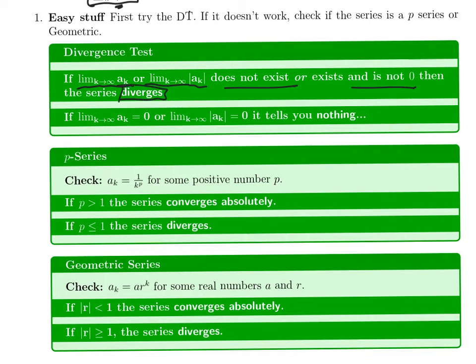So if the limit does anything other than converge to zero, that means if it converges to a number that is not zero, or if it doesn't converge, then the series diverges. You've decided everything there is to say about the series.